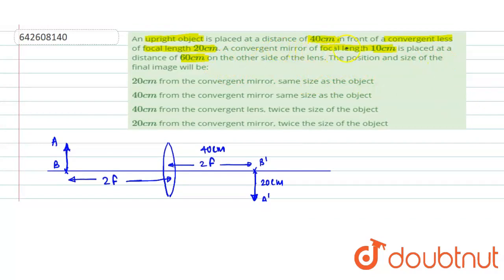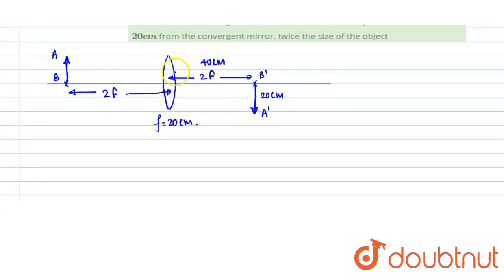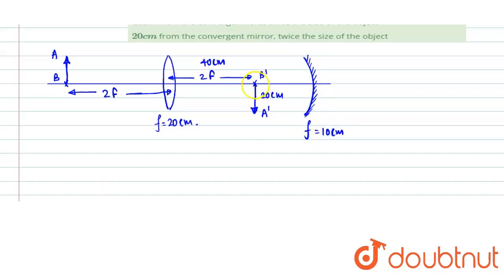The convergent mirror of focal length 10 centimeters is placed at a distance of 60 centimeters on the other side of the lens. So from the image A'B', the mirror is at a distance of 20 centimeters. This mirror has a focal length of 10 centimeters, so the object A'B' is placed at a distance of 20 centimeters from it.